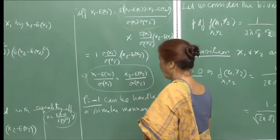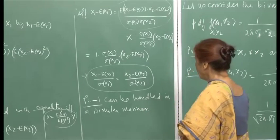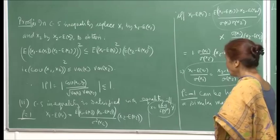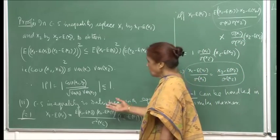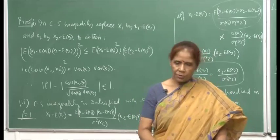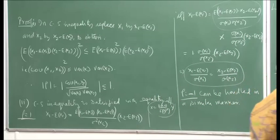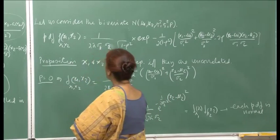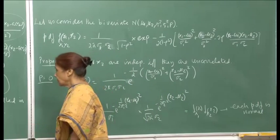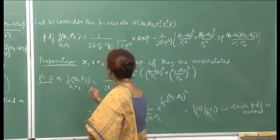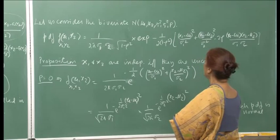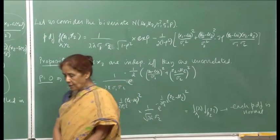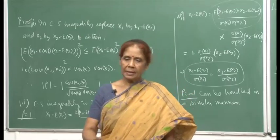The correlation coefficient ρ measures linear relationships well, but fails to capture non-linear relationships. When the relationship is quadratic or otherwise non-linear, ρ = 0 does not help you — you cannot conclude the variables are independent if the covariance is 0. Independence goes much deeper than uncorrelatedness.